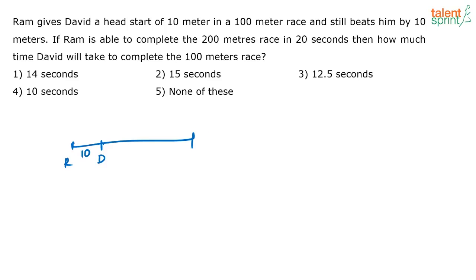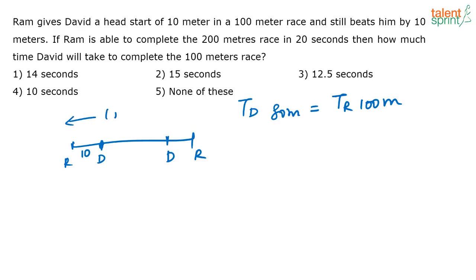The time that David takes — it is given that Ram is beating David by 10 meters — so the time taken by David to complete 80 meters is equal to the time taken by Ram to complete 100 meters. When Ram starts, David has already covered 10 meters. And when Ram is finishing the race, David is 10 meters behind. So when Ram starts and Ram finishes, by that time David has covered only 80 meters, because this 10 meters he covered even before Ram started, and this 10 meters he is lagging behind Ram when Ram is finishing the race.